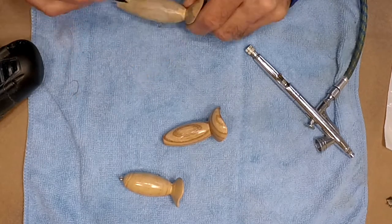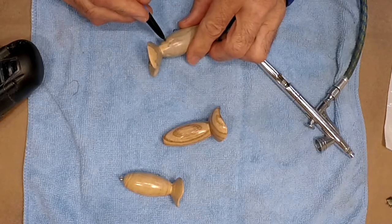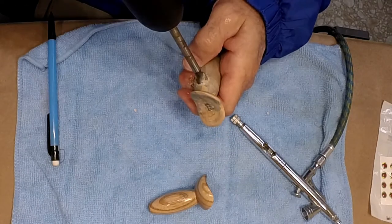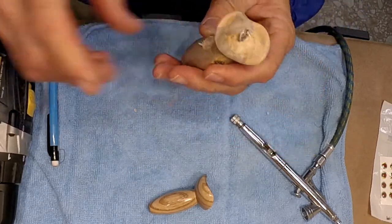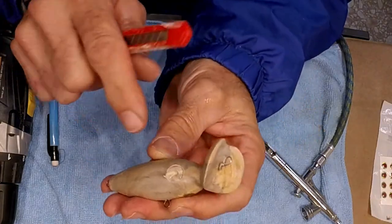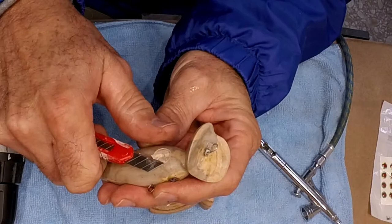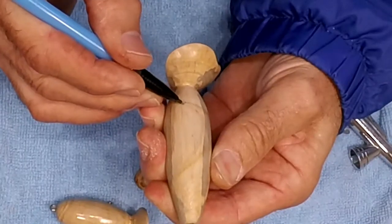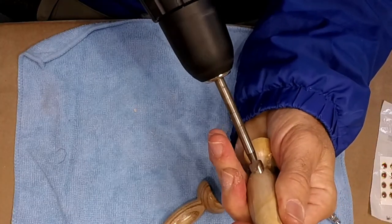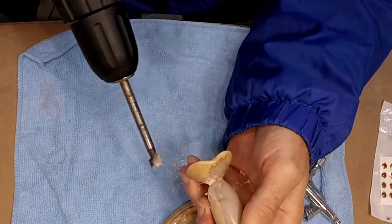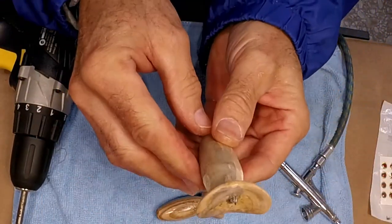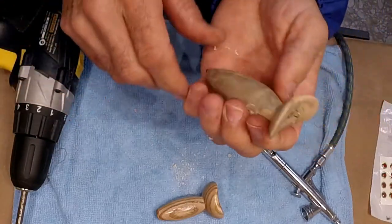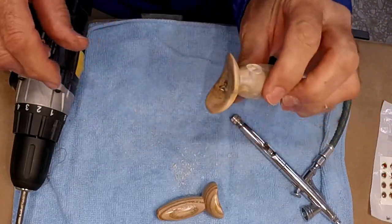First one is always the easy one because you can put it anywhere you want and then you've got to match the other one. That's the difficult one. It doesn't take much, just enough to create a flat spot for the eye to sit in. And that looks pretty good. You can see it's ready.